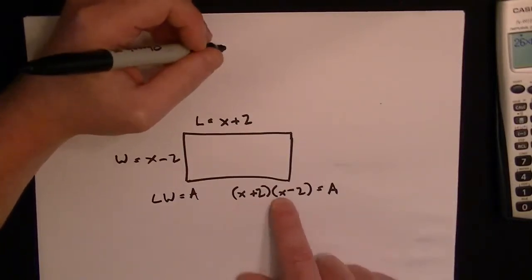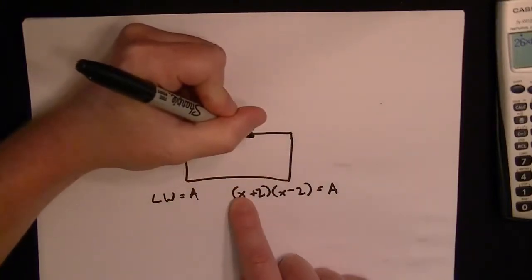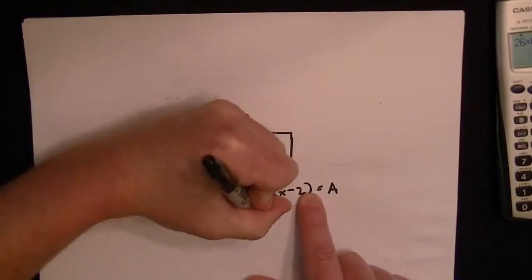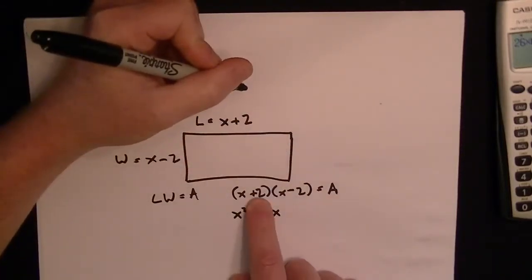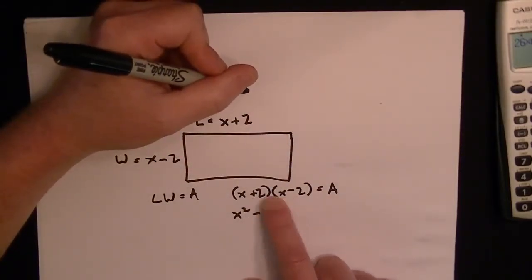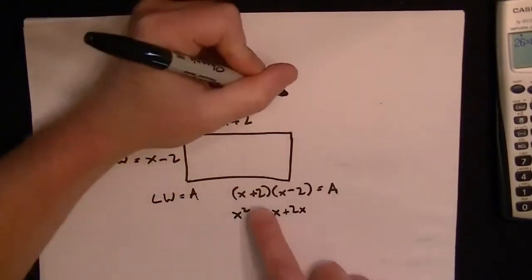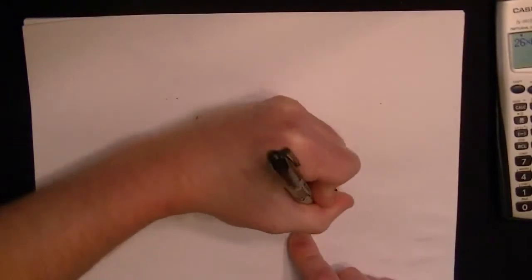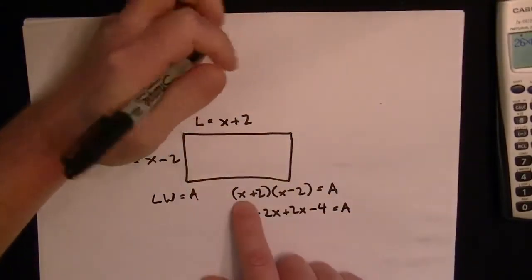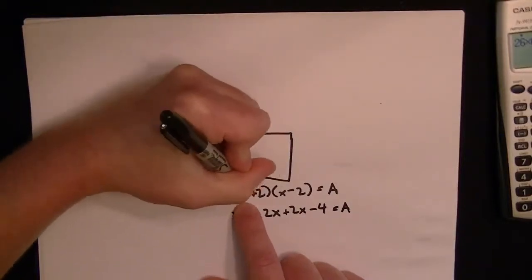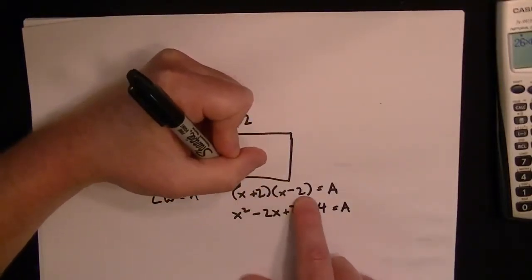The trick here is doing this multiplication. You multiply the first term by the first term, so that's x squared. Then you multiply x by minus 2, which is minus 2x. Then you multiply 2 by the first term, giving plus 2x, and 2 times minus 2 is minus 4. That equals the area.